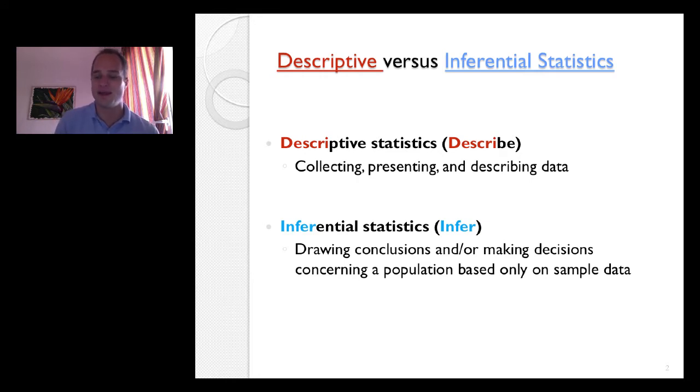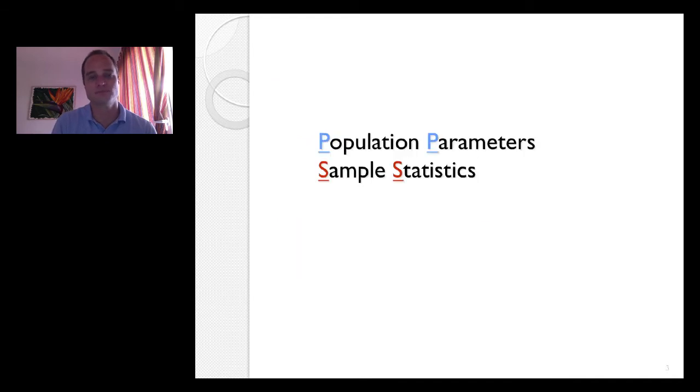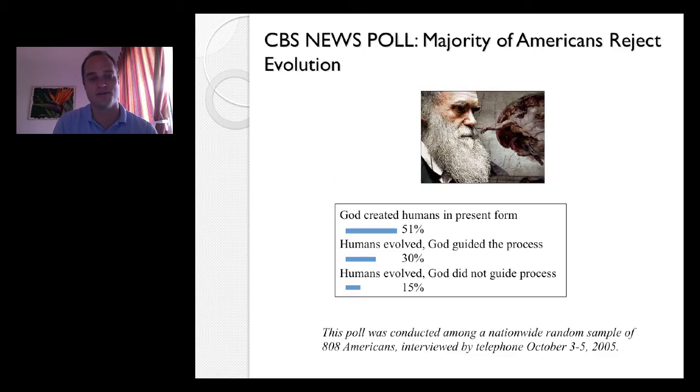So it has to represent the population of interest, which is voting Americans. And so some people find that actually striking. That's only 1,200 people are used to infer something about the entire country. But there is sound statistics behind that. And once we get the chapter on sampling distributions, that should be clearer.